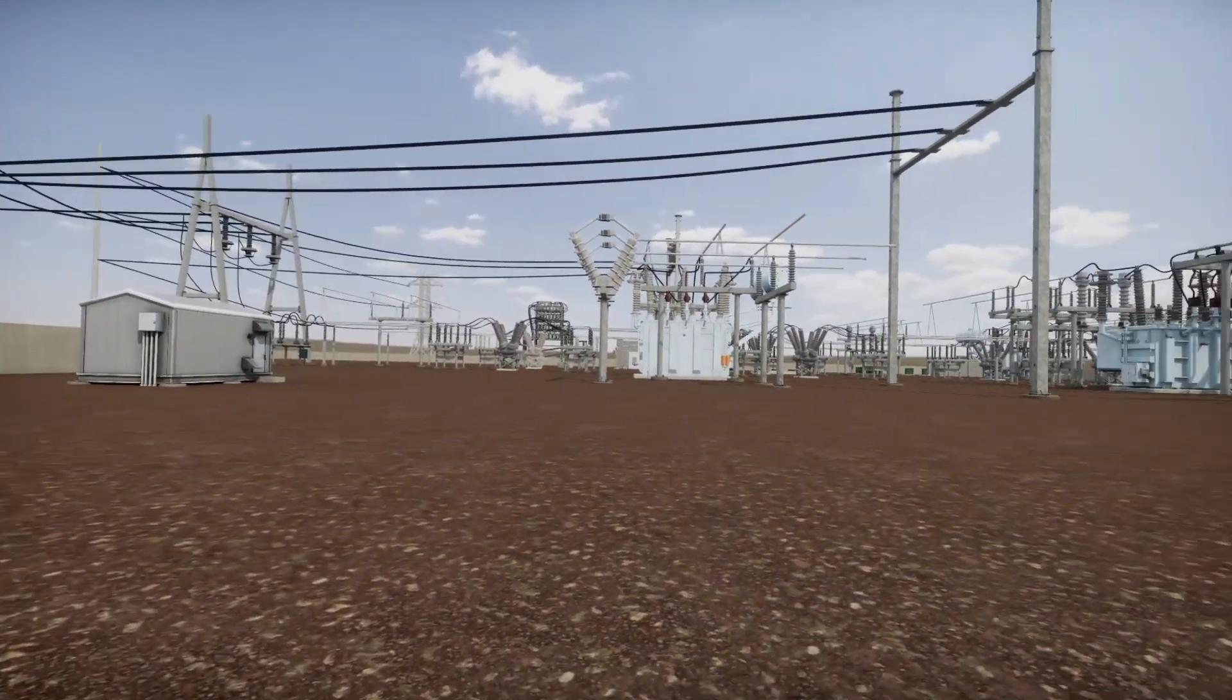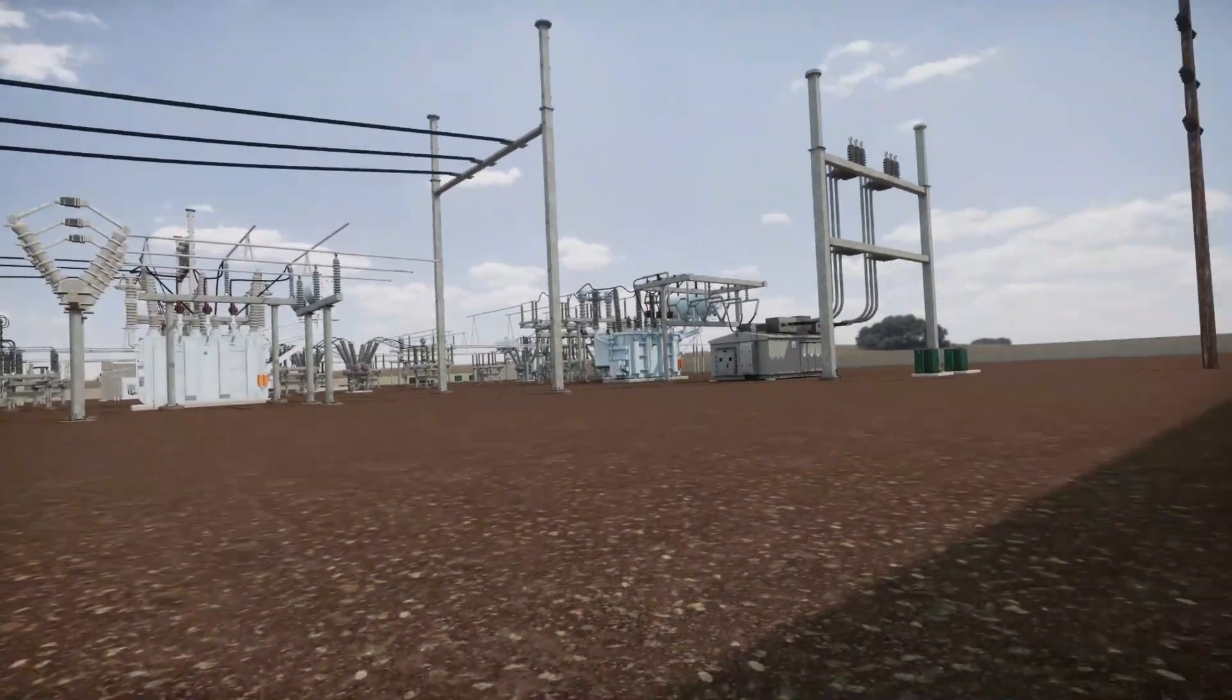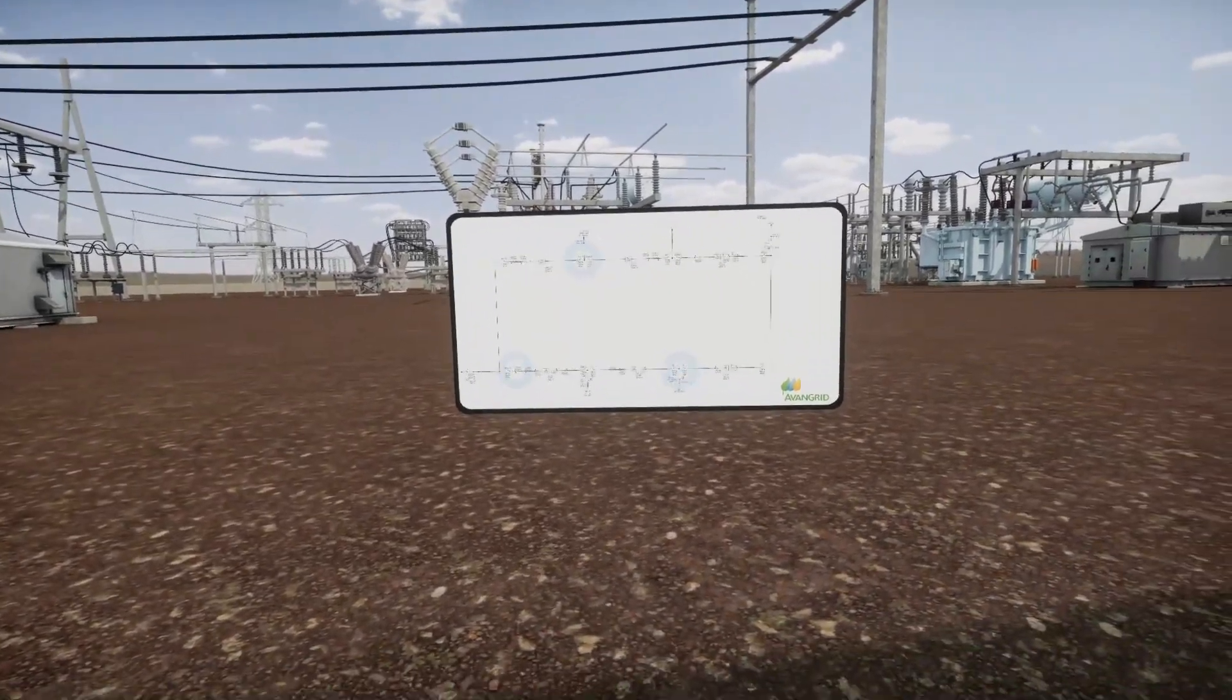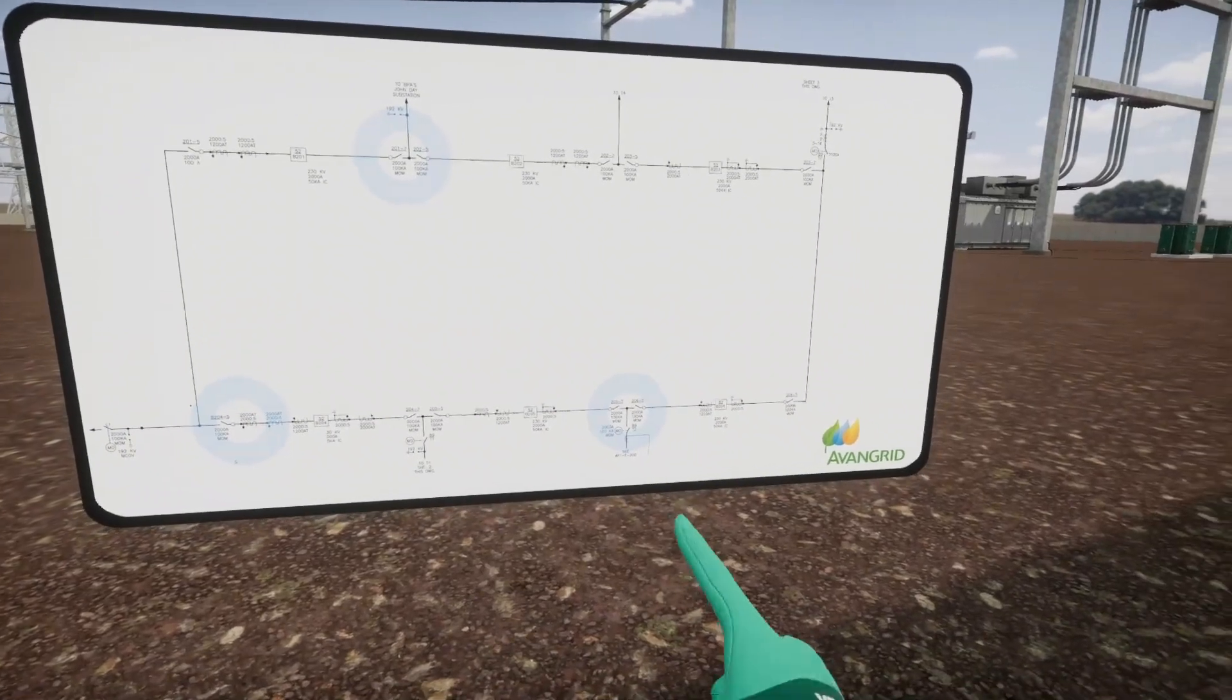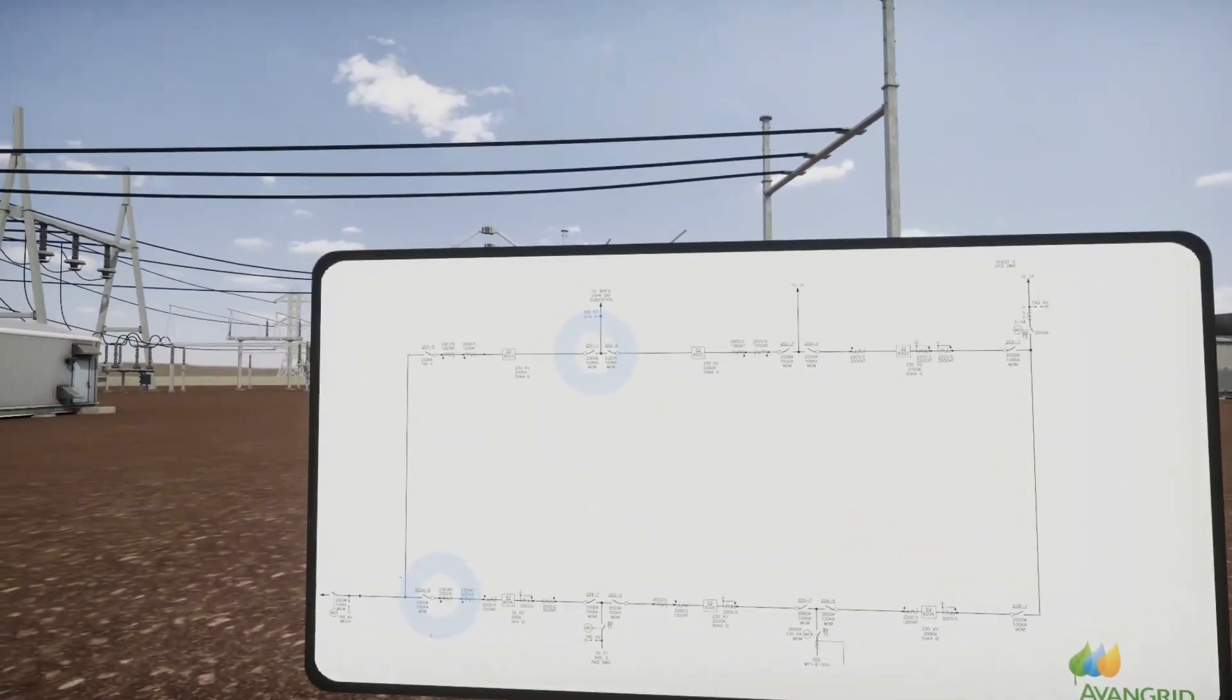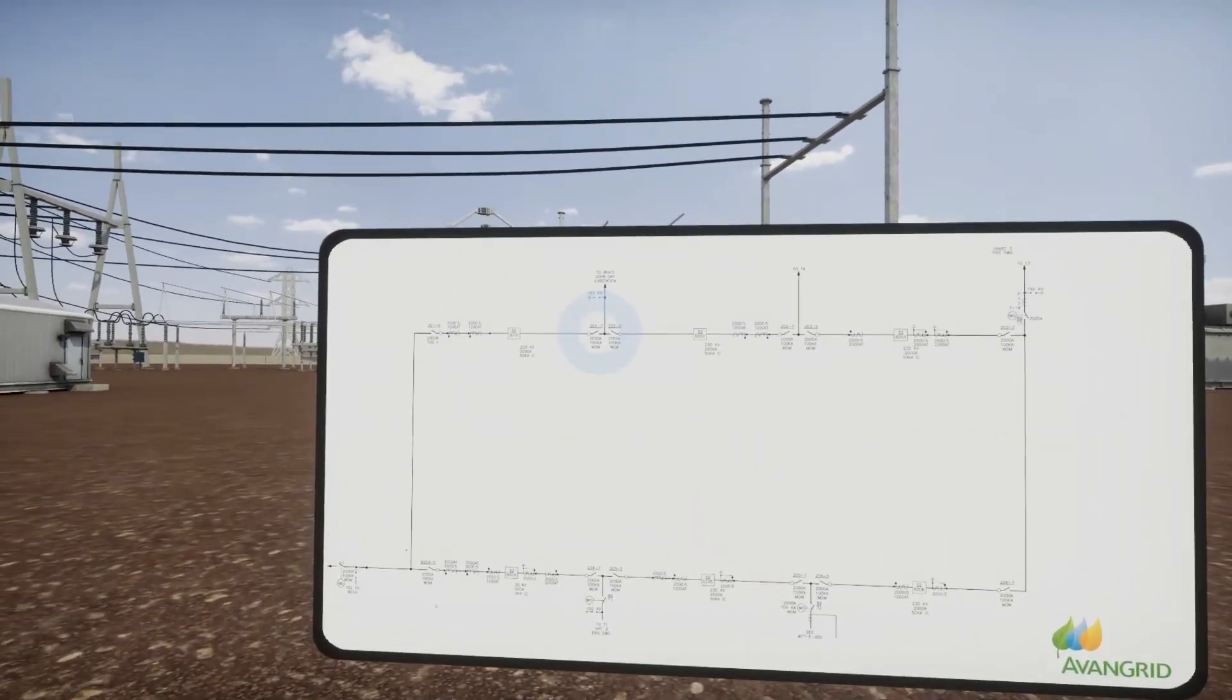Look around for any signs of animals inside the substation. Diagrams will appear throughout the experience. You can tap on these diagrams to zoom in.